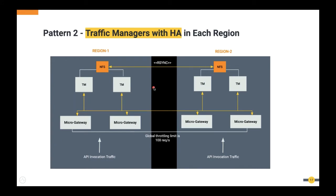Pattern two is traffic managers with HA or active-active configuration in each region. This has two HA or active-active traffic managers per region, along with two micro gateways. The throttling policies within a region are shared using NFS, while NFS between the two regions is synchronized using rsync, and micro gateways publish data to those traffic managers. Organizations can also modify this pattern to make rate limiting happen in a region-specific manner, as discussed in the previous pattern.